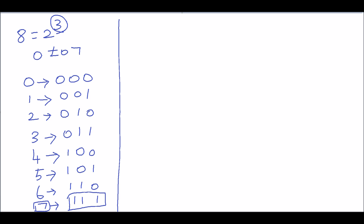I will explain this concept with a few examples. First, let's see how to convert the binary number 111101100₂ to its equivalent octal number. First, break the binary number into groups of three bits, starting the grouping from right to left. The first group from the right is 100.